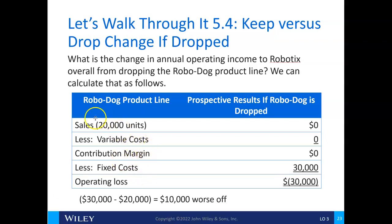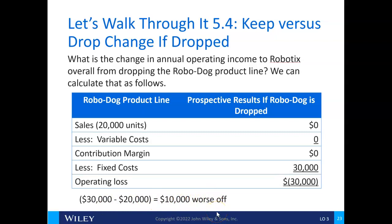If we drop RoboDog, we'll have no sales, no variable costs, and zero contribution margin — but we're still going to have those fixed costs. Before, we had a $20,000 operating loss; after dropping it, we'd have a $30,000 loss, meaning the company would be $10,000 worse off. Fixed costs are the big issue in almost all of these problems — and the key question is whether they are avoidable or unavoidable.